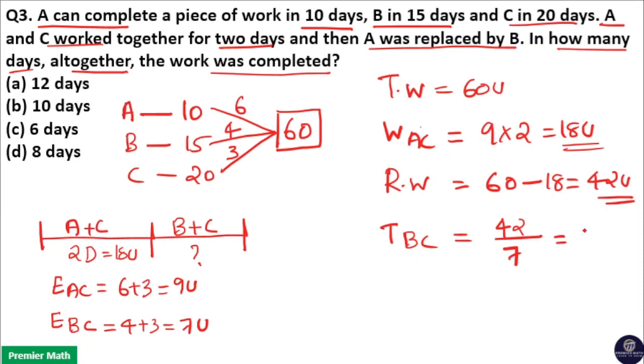So B and C will take 6 days to complete the remaining work. So total time taken by all these 3 is 2 days plus 6 days which is equal to 8 days. So 8 days is taken to complete this work. Option D is your answer.